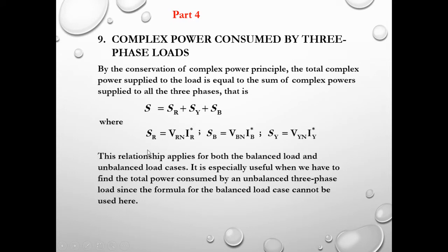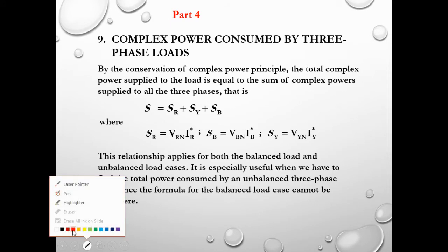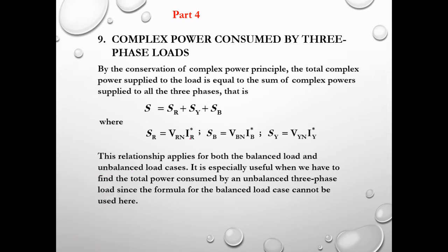So S_R equals V_RN times I_RN conjugate. Remember the conjugate symbol. S_B equals V_BN times I_B conjugate, and S_Y equals V_YN times I_Y conjugate. These are all in phase quantities — V_BN as well as V_YN.